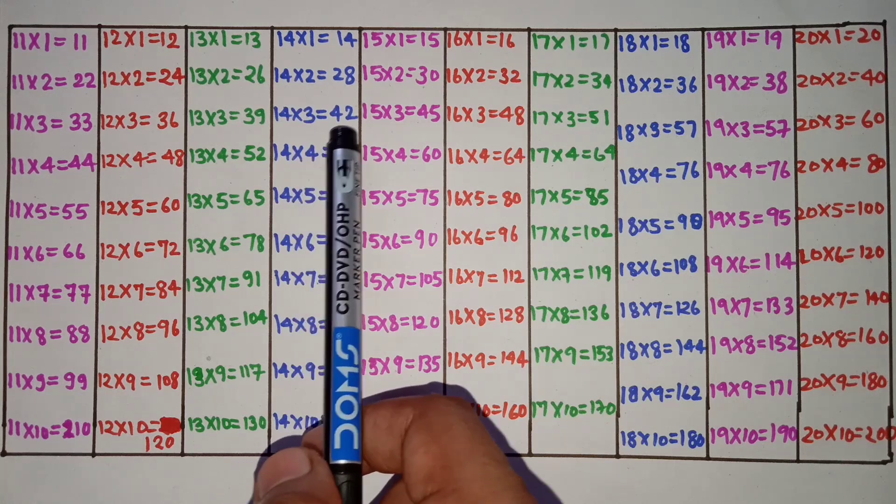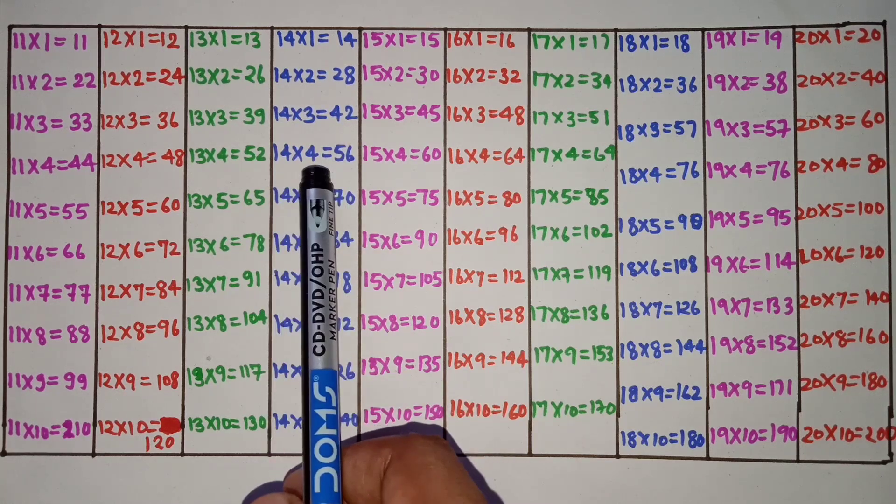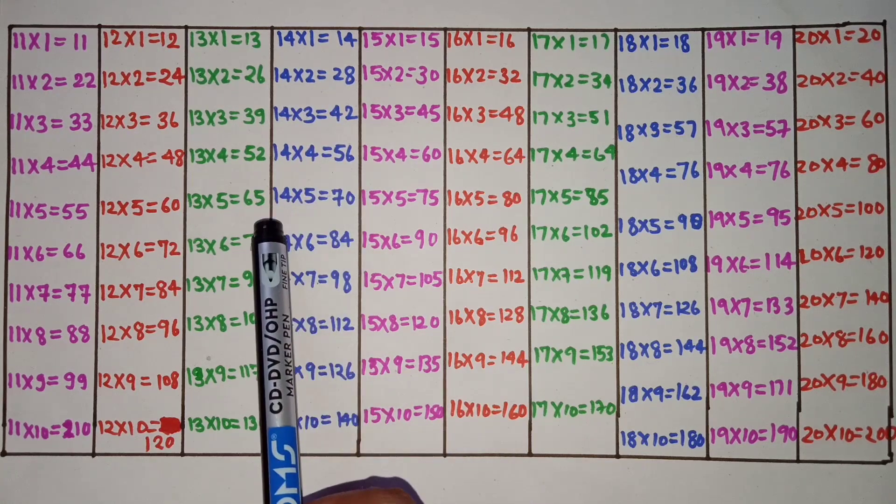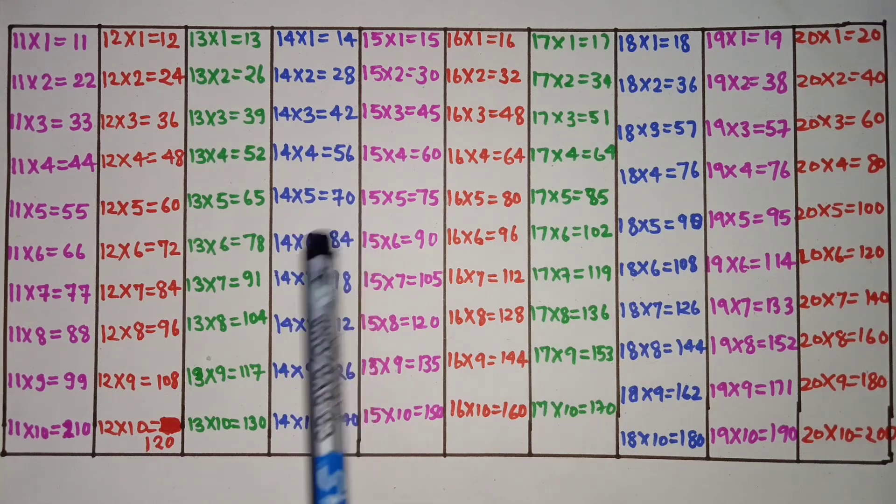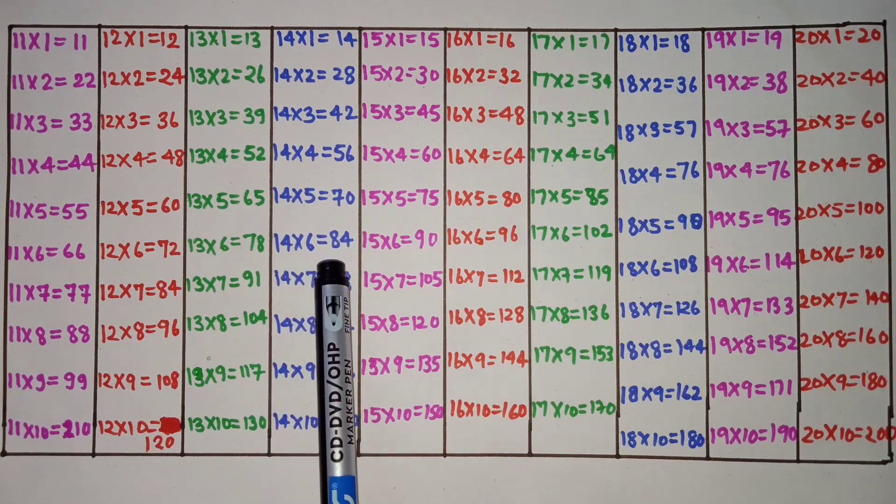14 threes are 42, 14 fours are 56, 14 fives are 70, 14 sixes are 84.